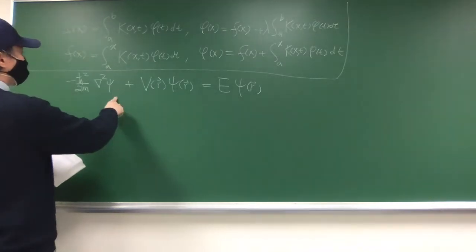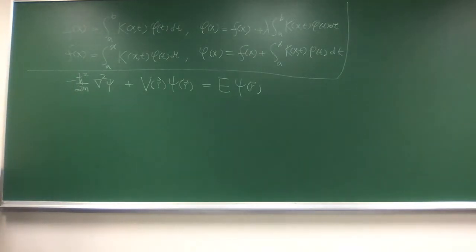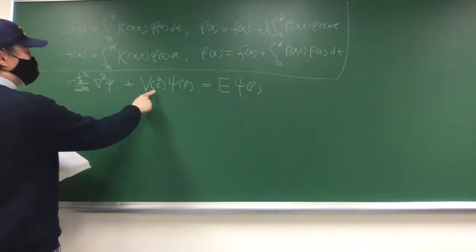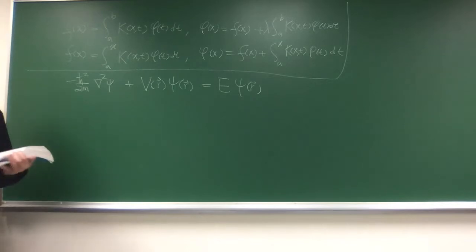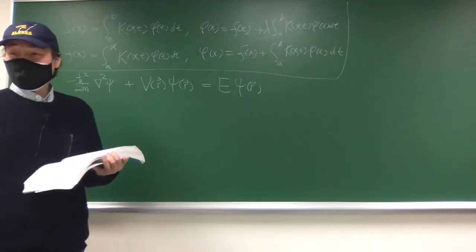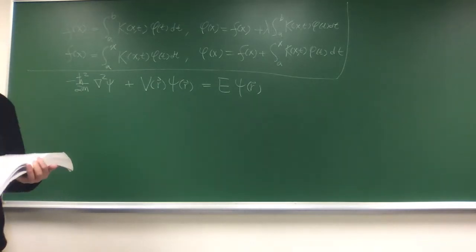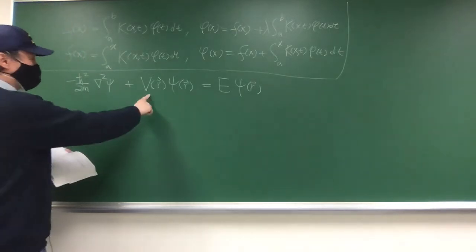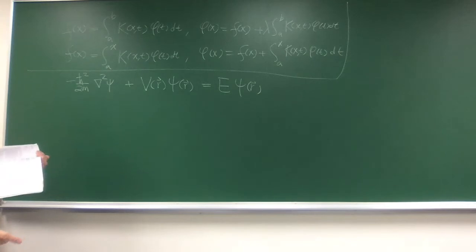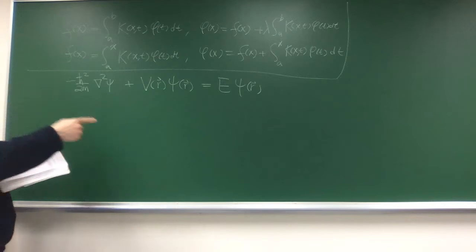But in terms of converting it to an integral equation, you can do a Fourier transform of the equation. The idea is that you have two functions V and psi, so the second term becomes a convolution in Fourier space. When you take the Fourier transform of a convolution, it becomes the product of the Fourier transforms of the two functions. That's the general case, but the next equation in your textbook is for the special case where V is just a Coulomb potential.